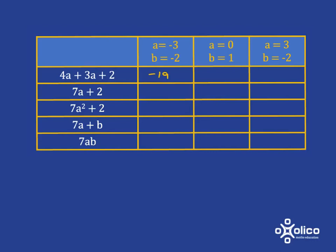When a is 0, we're going to get 0 plus 0 plus 2, which is 2. And when a is 3, we're going to get 12 plus 9, which is 21, plus 2, which is 23.